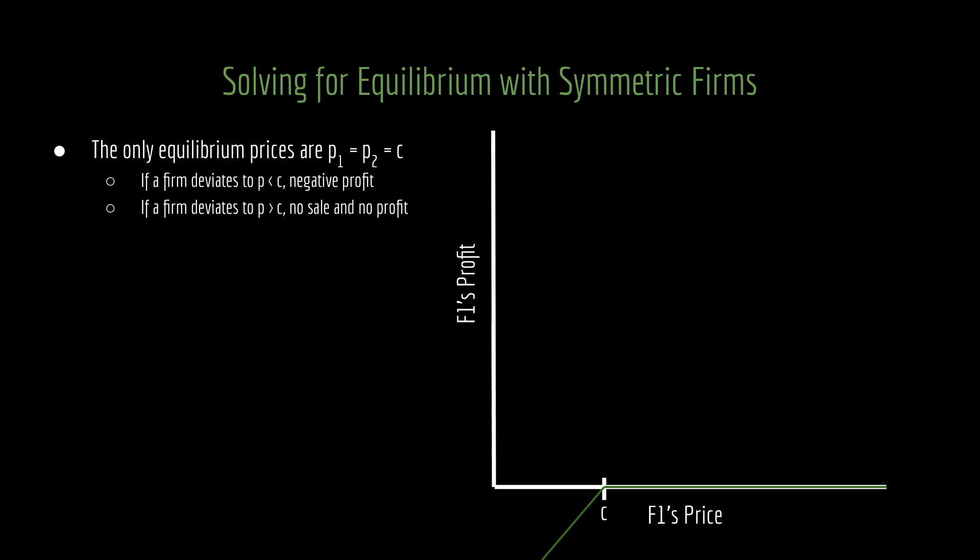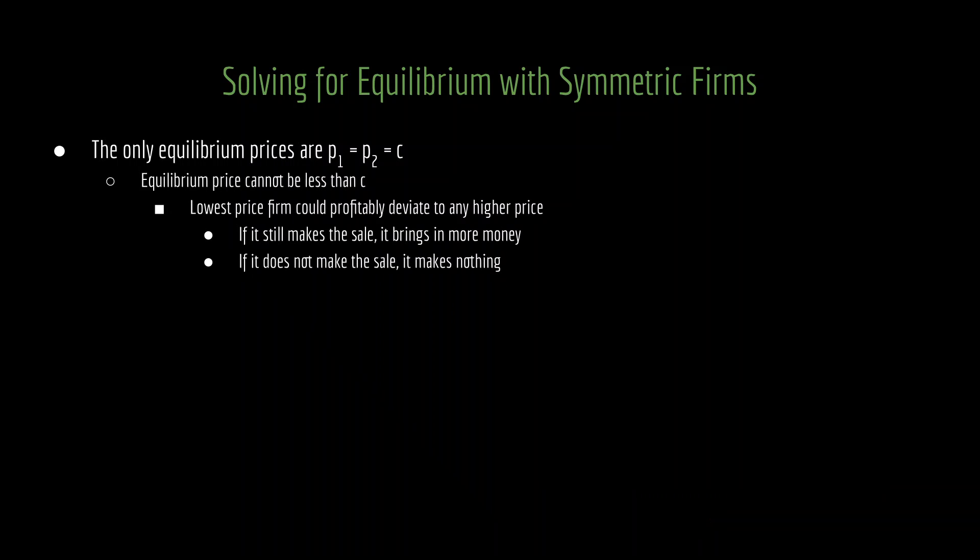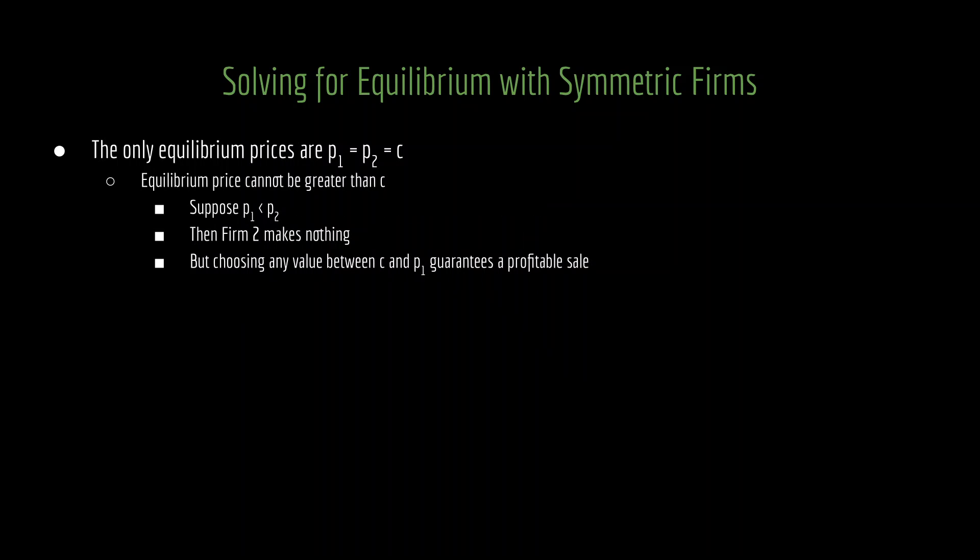Another question, of course, is why is this the only equilibrium? Why can't we have an equilibrium that's going to be anything other than this? Well, one of these cases is straightforward. It should be pretty obvious why we can't have an equilibrium price that is less than C. If that were the case, then whoever is the lowest price firm and is making a sale here, that firm can profitably deviate to any higher price. If it is still making the sale, well, at least it's bringing in more money, so that's good. And if it's not making the sale, well, now it's making nothing, and that's better than selling at a price that is less than how much it costs to produce. So obviously we can't have an equilibrium price that is less than C.